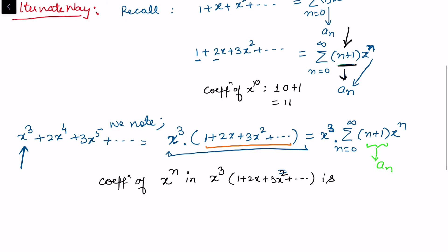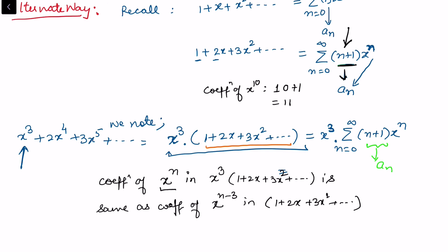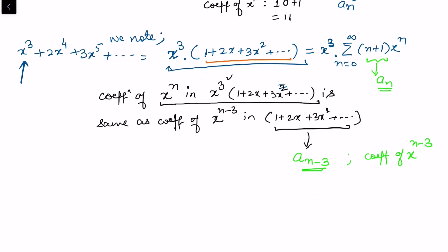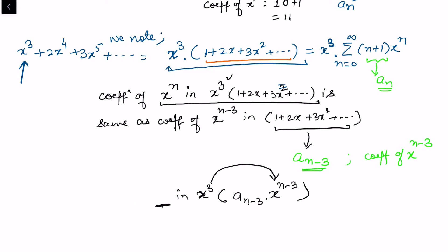The coefficient of xⁿ in the expansion x³ · (1 + 2x + 3x² + ...) is the same as the coefficient of xⁿ⁻³ in (1 + 2x + 3x² + ...). Because 3 is already accounted for, I look for the (n−3)th coefficient in the remaining term. That coefficient is aₙ₋₃, the coefficient of xⁿ⁻³, and when multiplied by x³ we recover the coefficient of xⁿ.